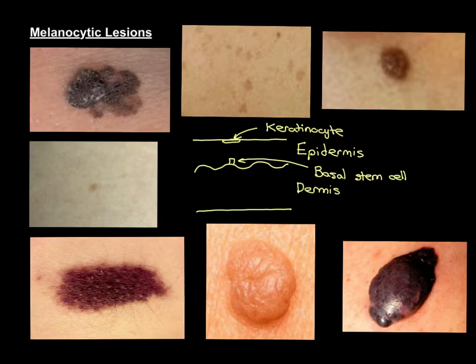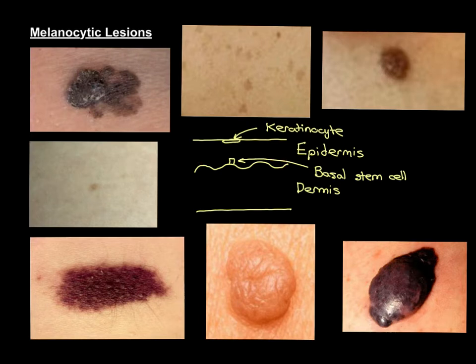The dermis is much easier to discuss — it's simply a connective tissue layer, containing connective tissues such as collagen and elastin. It's full of blood vessels, lymphatic vessels, and nerves. The blood vessels supply the nutrients the epidermis needs, so the dermis is essentially a connective tissue layer that supports the epidermis.